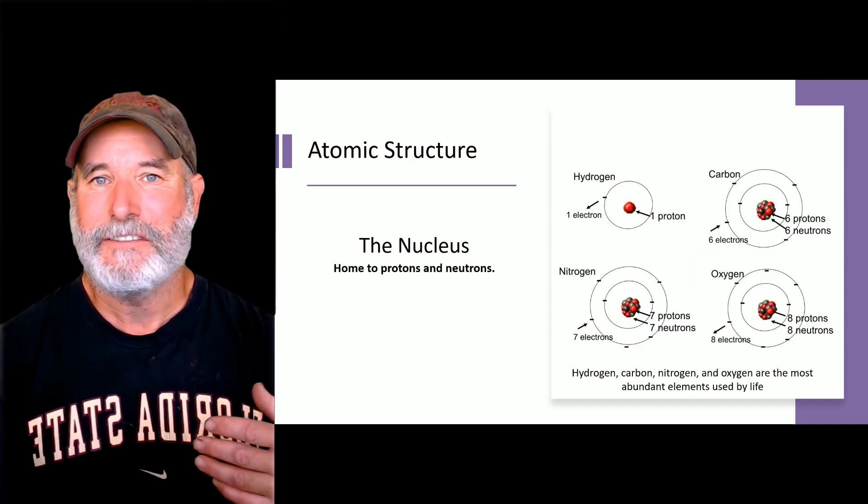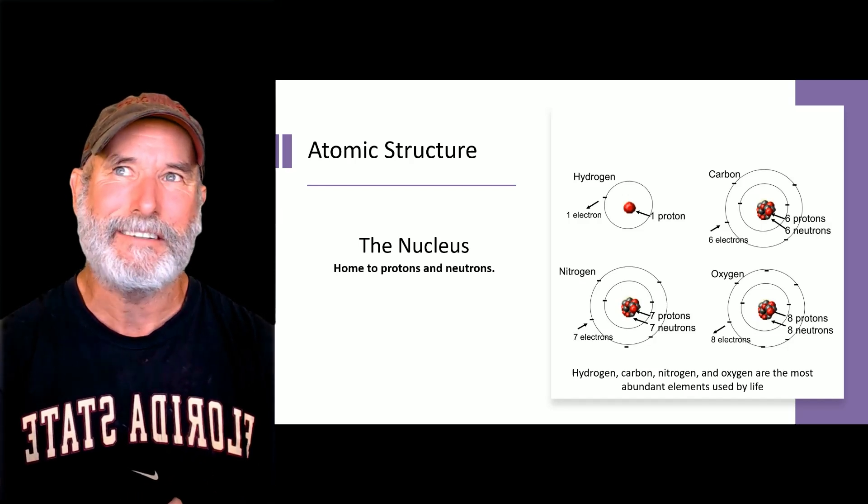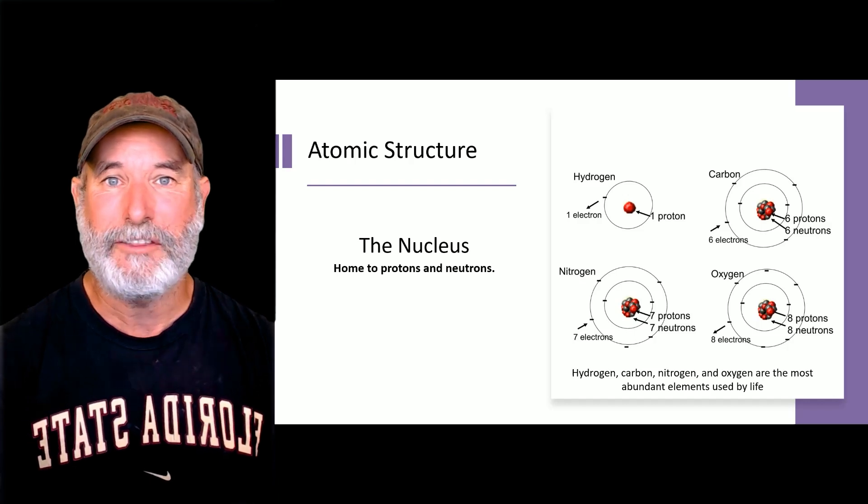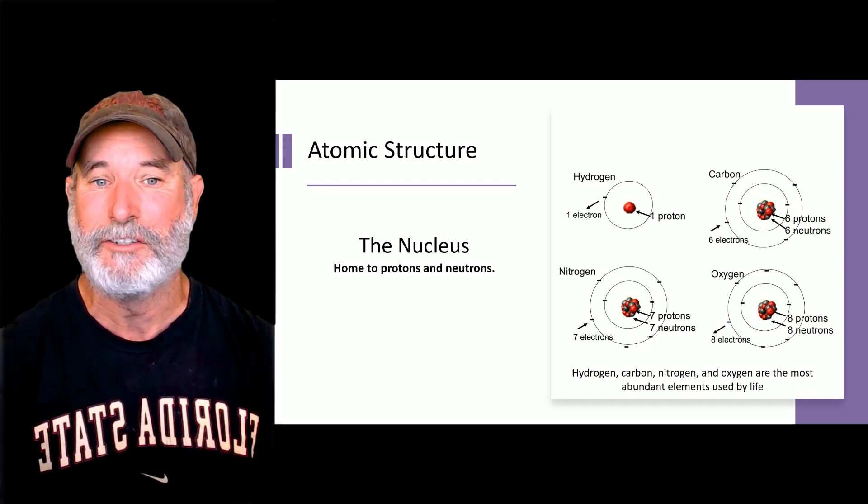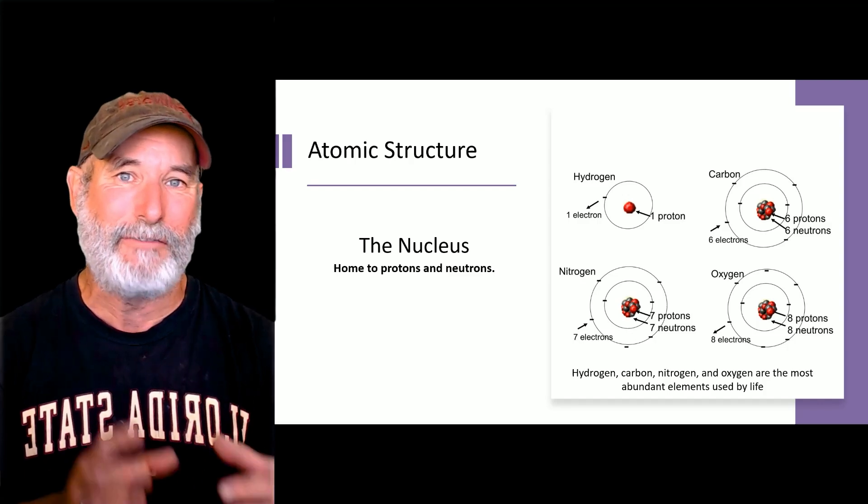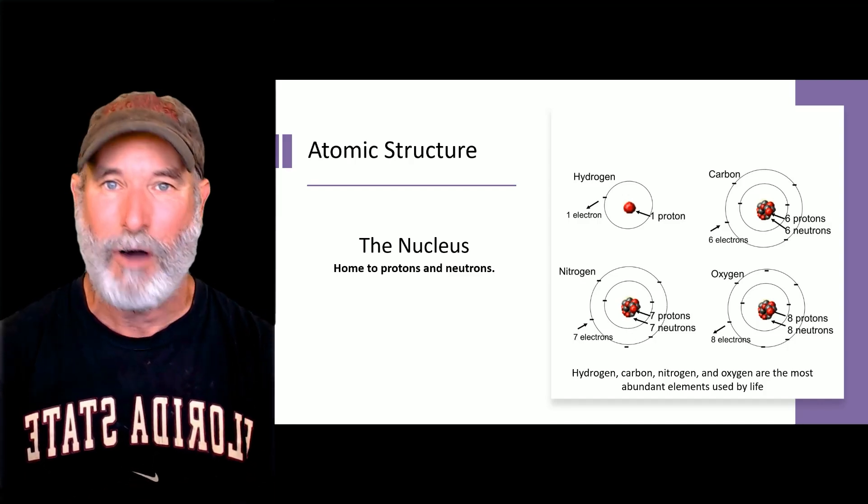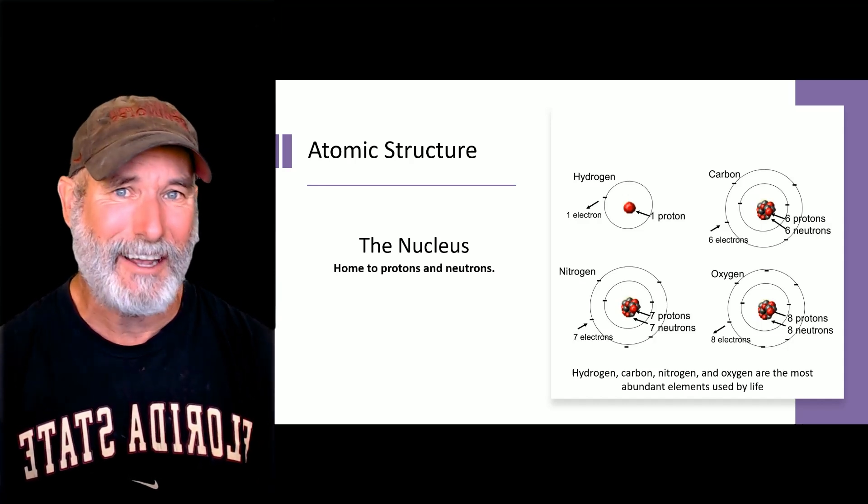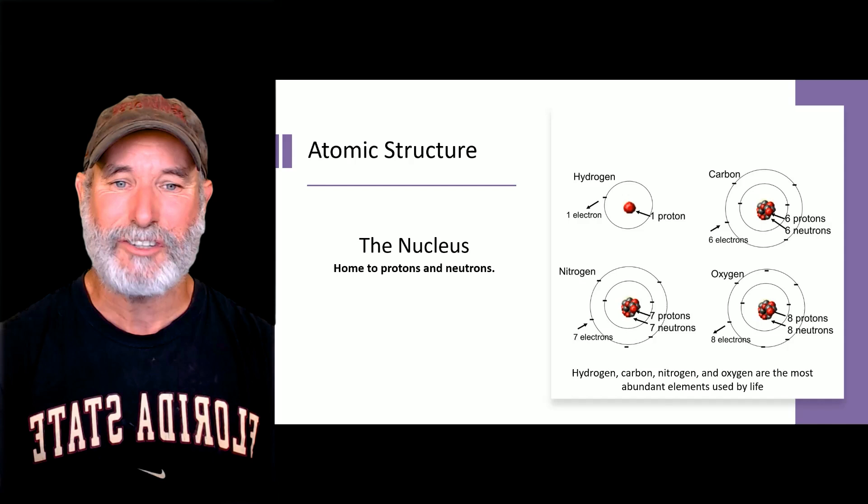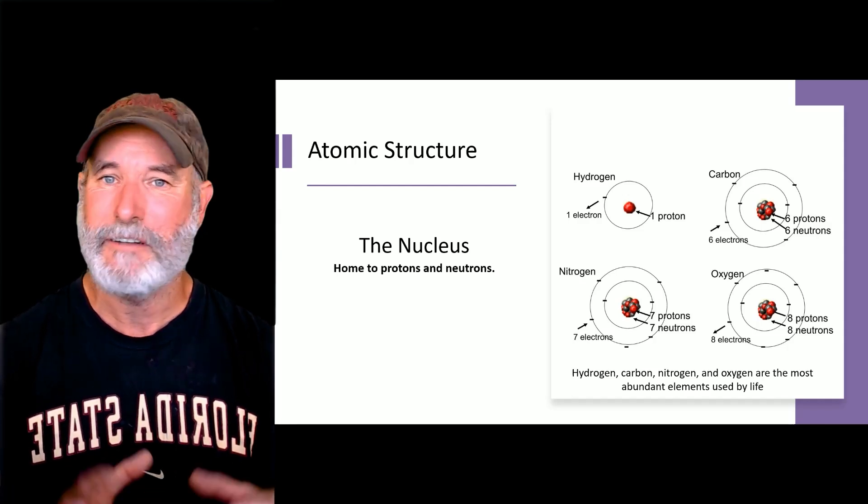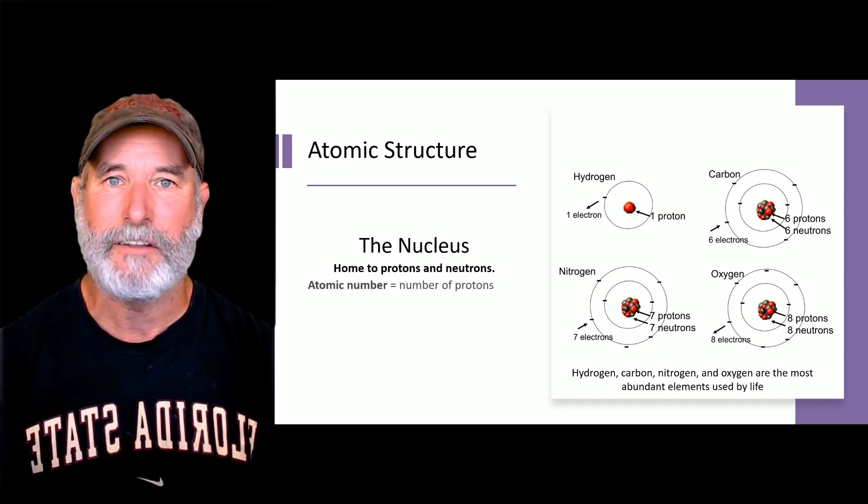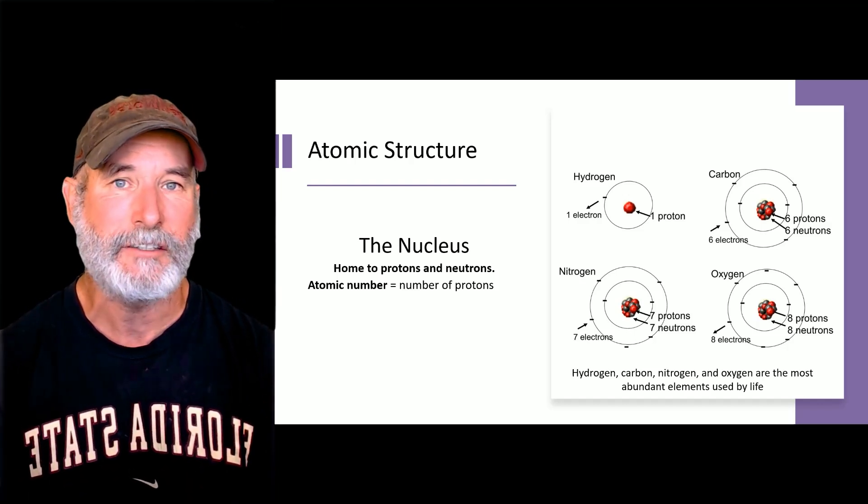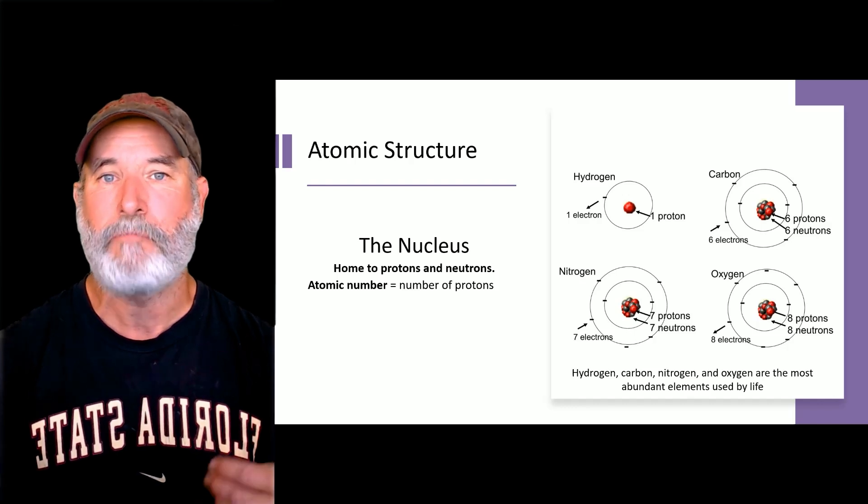Okay, so we've got these atoms. They're mostly empty space. I should show a picture of this. But if you had a stadium and you put the nucleus, the protons and neutrons would be on basically the 50-yard line, and they'd be the size of ping-pong balls. And the electrons would be fleas orbiting outside of the stadium. It's pretty crazy. But in our atomic structure, we've got the nucleus. Atoms are mostly space. We've got the protons and the neutrons.